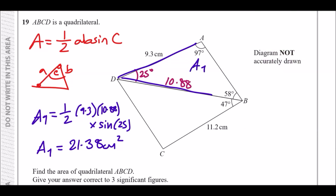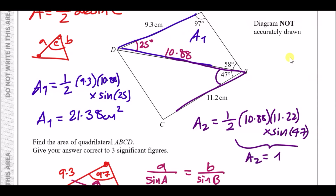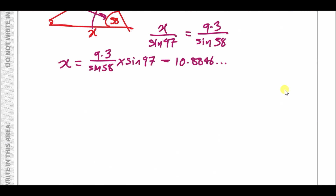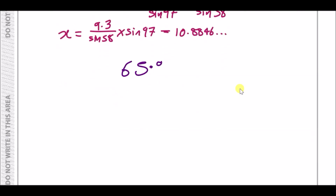For the second triangle, using the same formula with sides 11.2 and 10.88 and the included angle: area A2 equals half times 10.88 times 11.2 times sine of that angle, giving approximately 44.56. Adding both areas and rounding to three significant figures gives a total area of 65.9 centimetres squared.